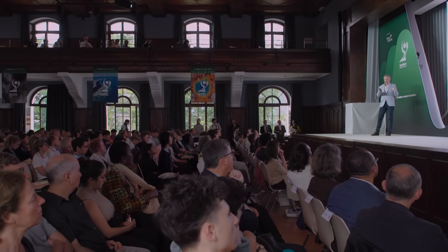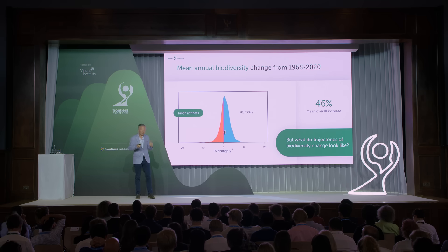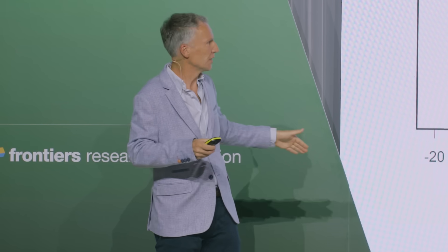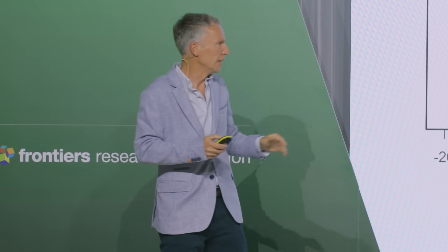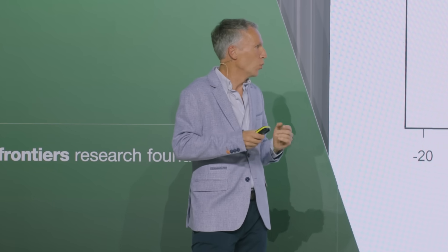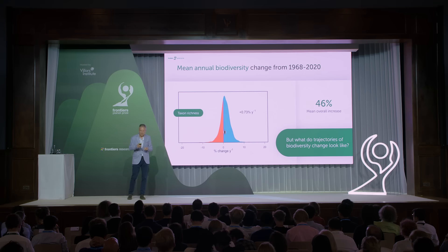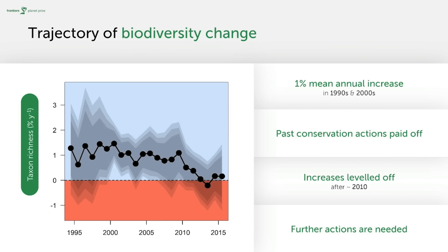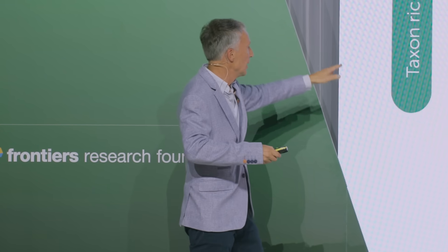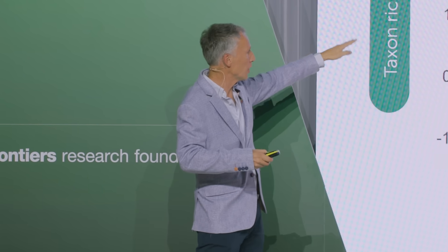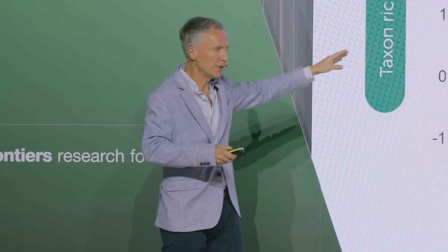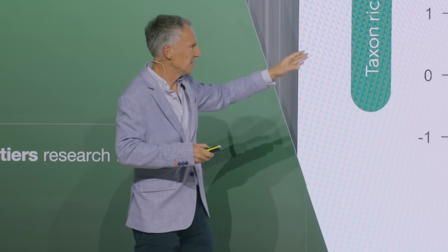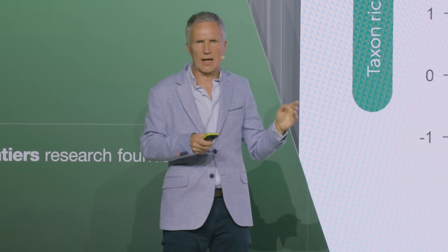The overall average is 0.73% per year, which accumulated over these 53 years to almost a 50% increase in the number of species found. Knowing the mean is always interesting, but you still don't know what happened over these decades — was it a continuous increase or more fluctuating? This is why we also asked what the trajectories of biodiversity change look like. We were able to reconstruct the trajectory starting from the early 1990s, and relating to taxon richness, we see a quite constant increase of 1% per year through the 1990s, more or less continuing throughout the 2000s.